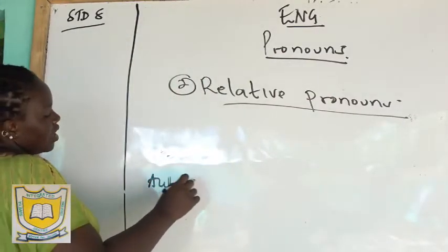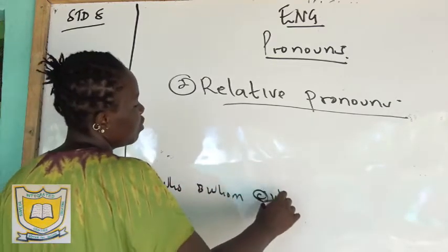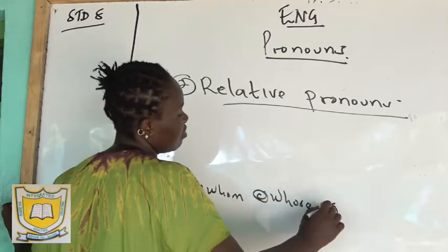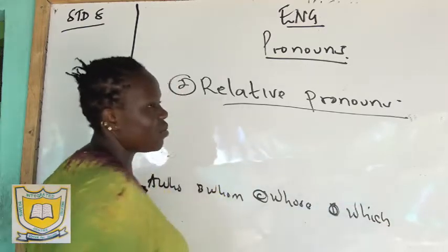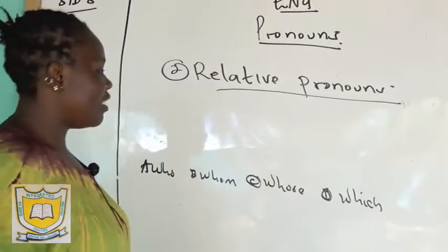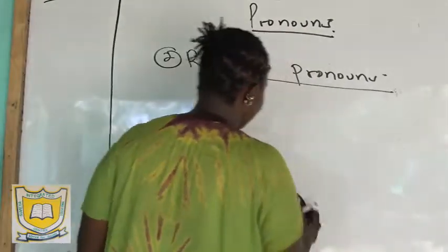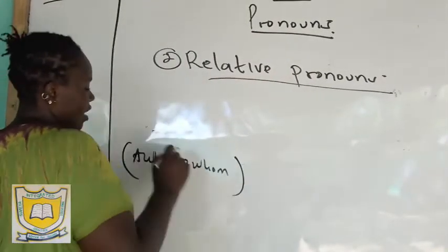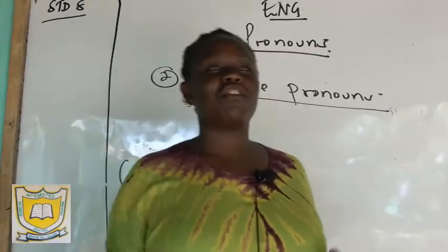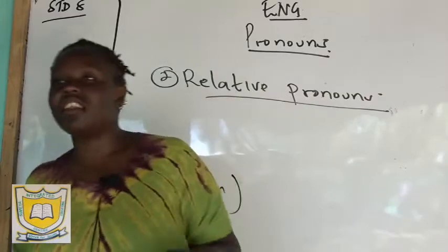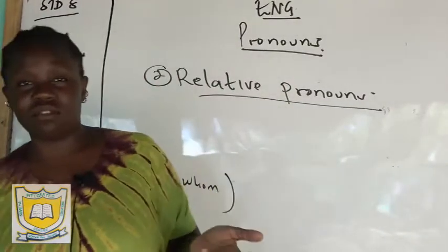For example, you may be given options: A is 'who', B is 'whom', C is 'whose', D is 'which'. Learners can manage 'which' and 'whose', but when it comes to 'who' and 'whom', they are at a standstill. People do not know when to use 'who' and when to use 'whom' in a sentence.